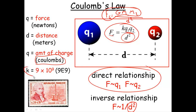Also, K is a constant — this never changes — 9 times 10 to the 9th. That's a huge number! And that should tell you something about electrostatics, the electric field, versus the gravitational field. With that constant being so huge, it must be much, much stronger. In fact, gravity is the weakest force. So, let's apply this.